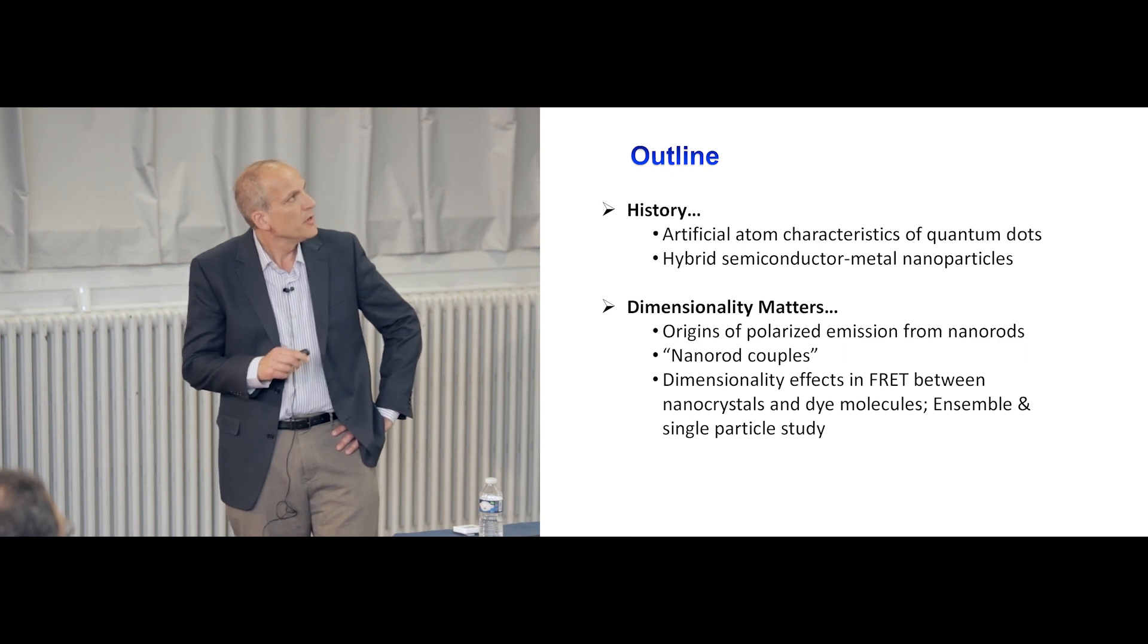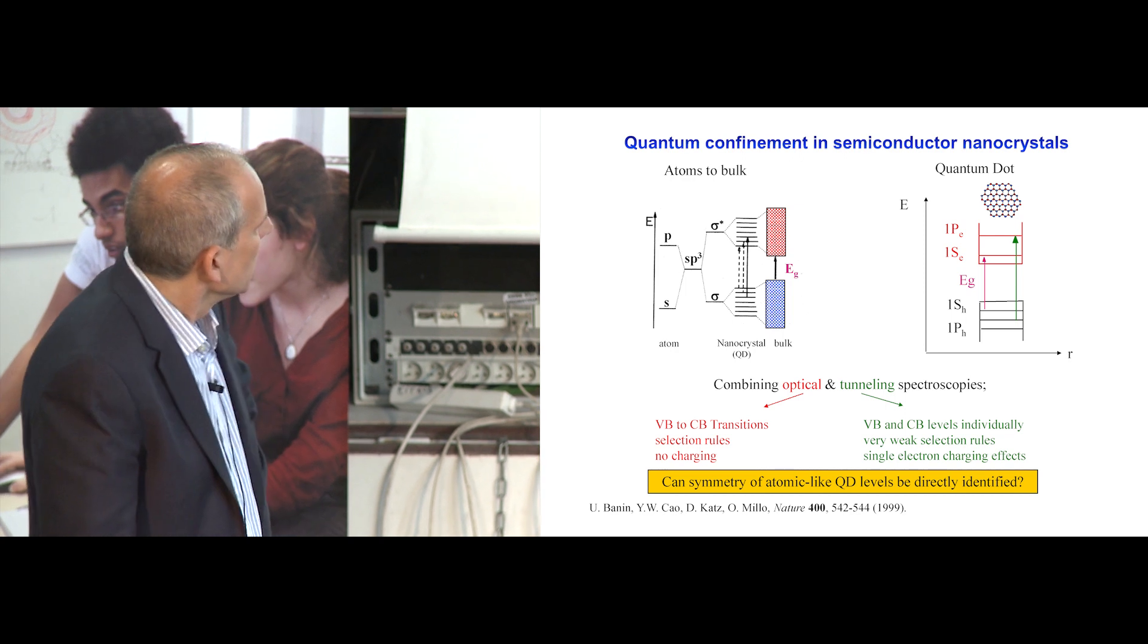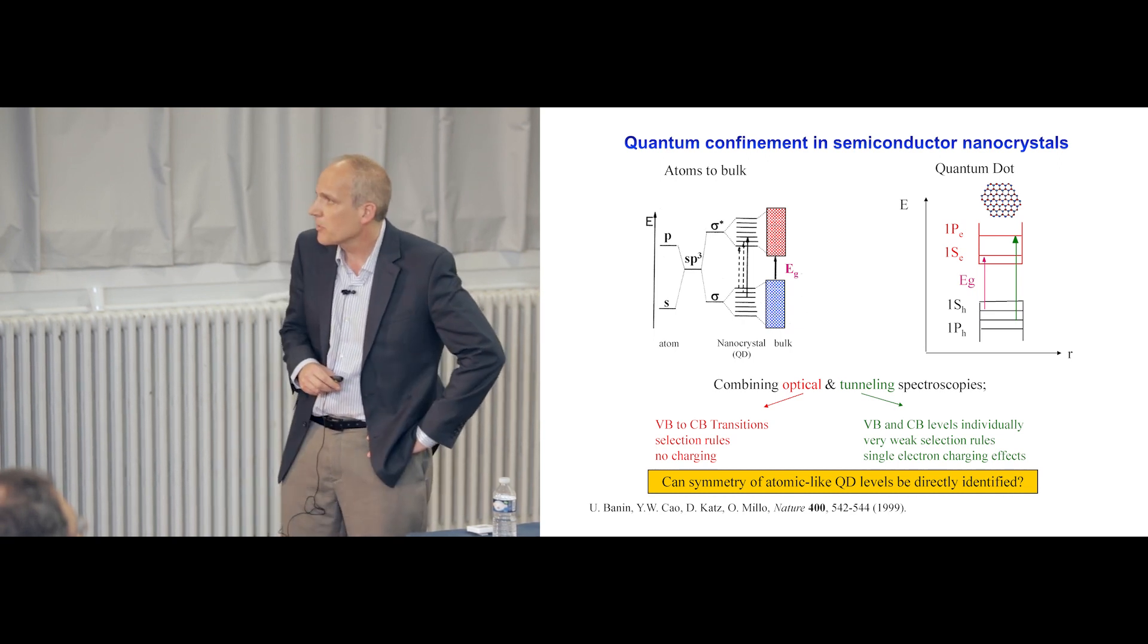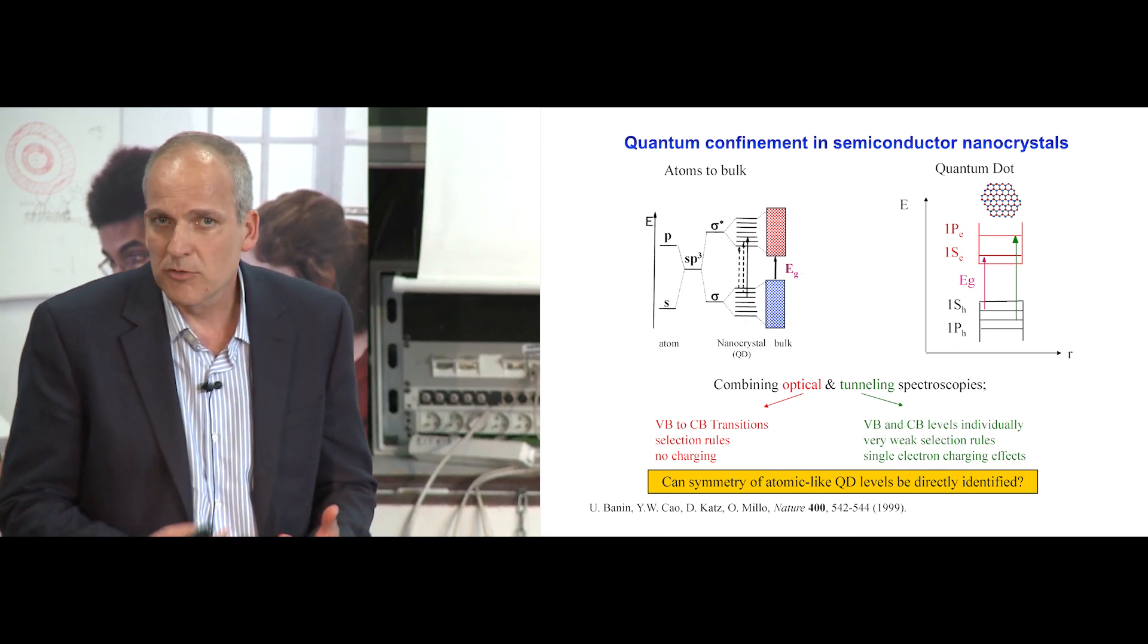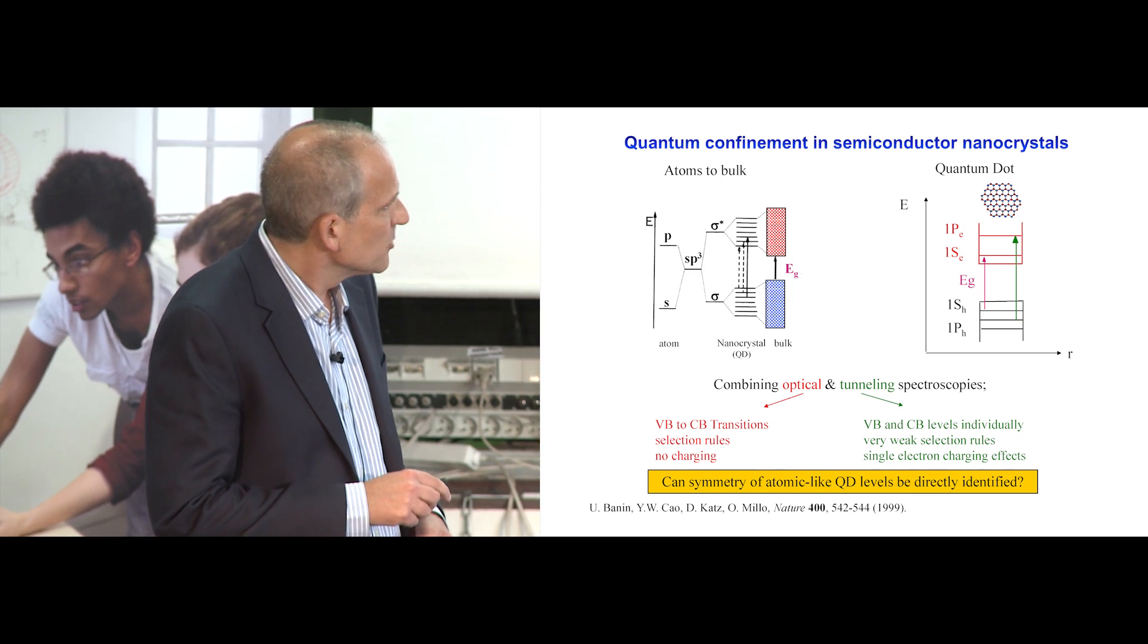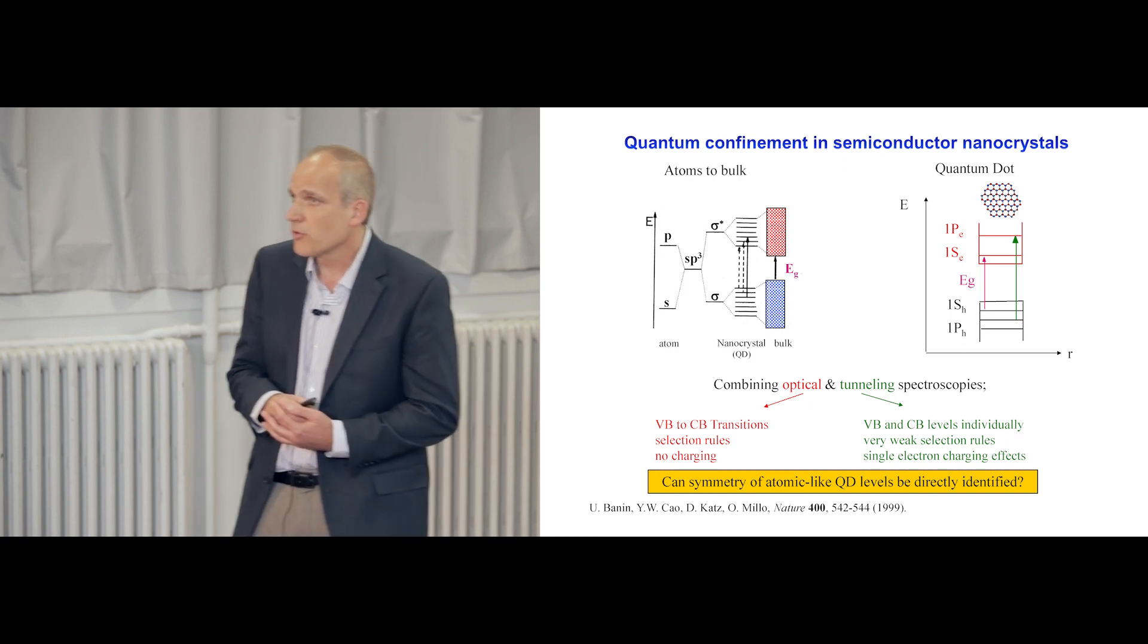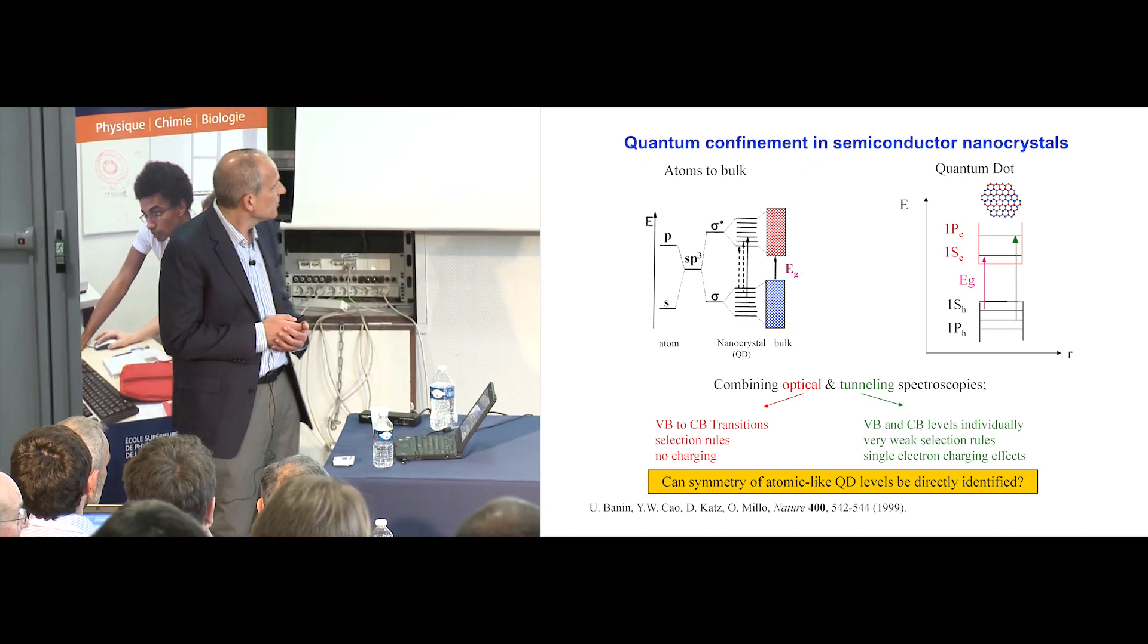In the quantum confinement aspect, what we did when I came back to Jerusalem, I met up with Professor Oded Milo, and together, we decided to combine optical and tunneling spectroscopies to this quantum dot problem. And it was quite a useful endeavor because these are really complementary methods considering that optical spectroscopies are sensitive to transitions which are governed by selection rules between valence band and conduction band states. And when you use tunneling, you can probe either the valence or conduction band states individually and separately and without selection rules, basically. Here you also have single electron charging effects where there is no charging in the optical case, and this opportunity also allows for the potential to actually extract also symmetry of states based on their degeneracy or charging properties.